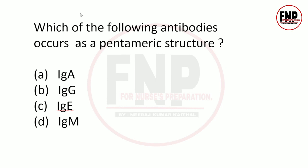Next question: Which of the following antibodies occurs as a pentameric structure? Options: IgA, IgG, IgE, IgM. Option D is correct - IgM. IgM ki jo structure hai woh pentameric hoti hai. Ise pentameric isliye kaha jaata hai kyunki isme 5 immunoglobulin subunits present hoti hain.